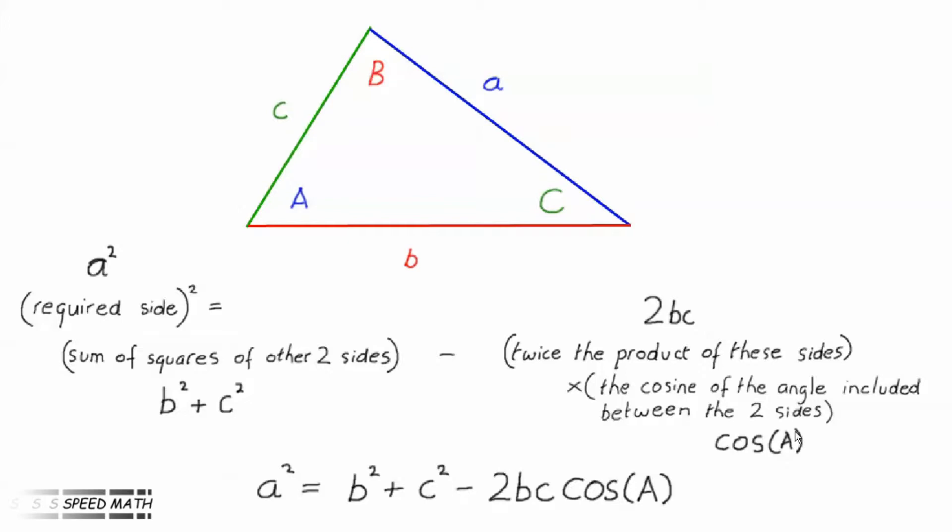So looking again at the equation, a² the required side squared is equal to b² plus c², the sum of the squares of the other two sides minus 2bc, twice the product of these sides, times the cosine of the angle included between the two sides, cos(A).